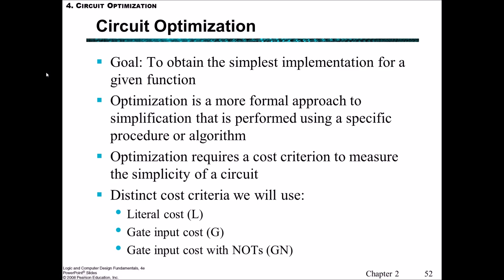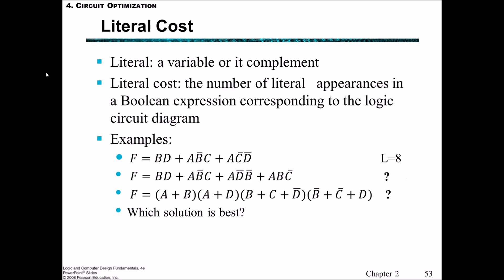In terms of the literal cost, remembering that a literal is some variable like A, B, C, X, Y, Z, the literal cost is then the number of times that that literal appears. We just simply count it. So for the first example here we have F equal to these, and there's a total of eight literals, so L equals eight.